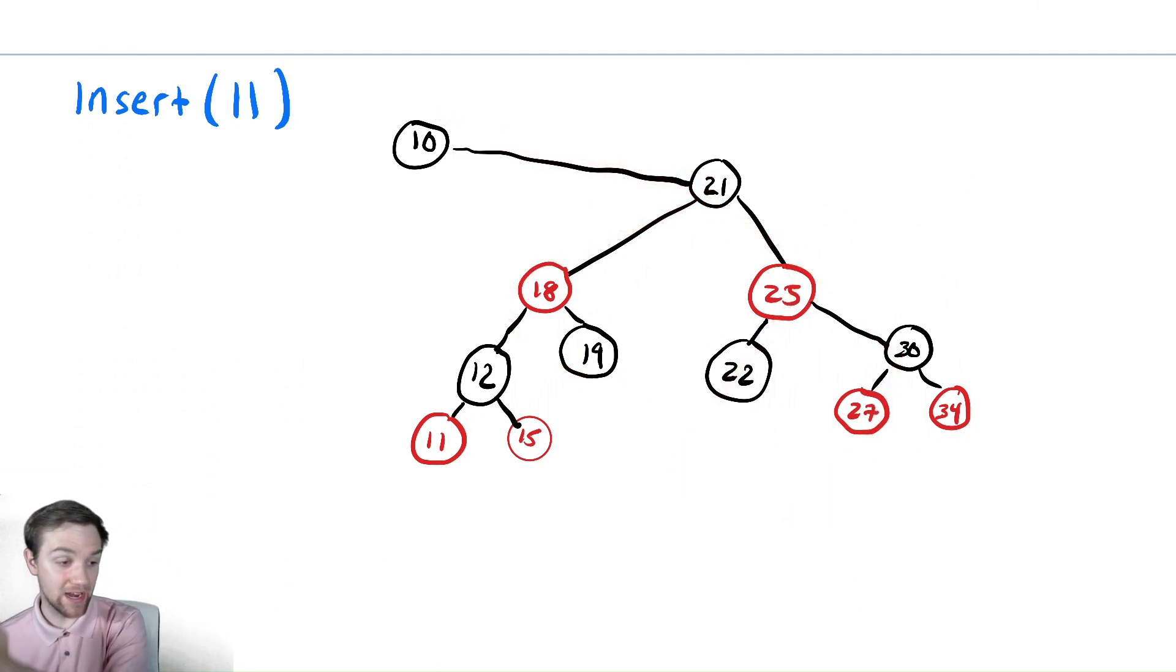So we perform a right rotation on the grandparent of the node, and then we are going to recolor the children of our parent, which includes ourselves, but we actually don't really need to do that. So we recolor the parent and the sibling to be black and red respectively.